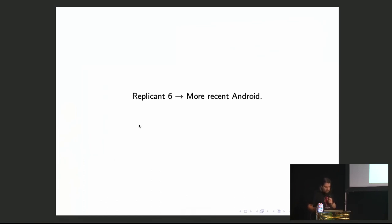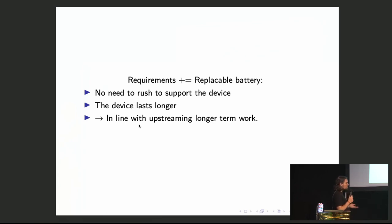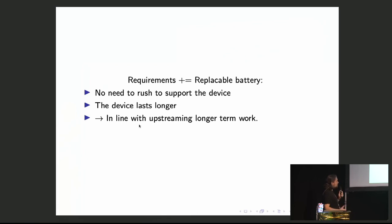Since we are based on Android 6, we need to look at how to make things more sustainable. One big issue is the battery. If the battery is not replaceable, the lifetime is very limited — developers can't keep using the device long-term, and second-hand buyers may get a device with a worn battery. So we don't want to support devices with non-replaceable batteries.